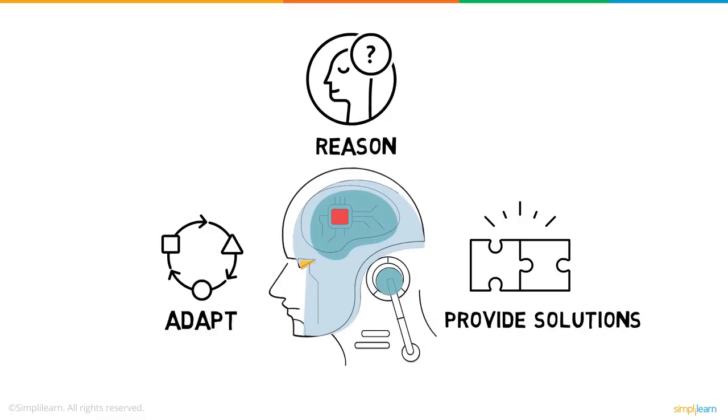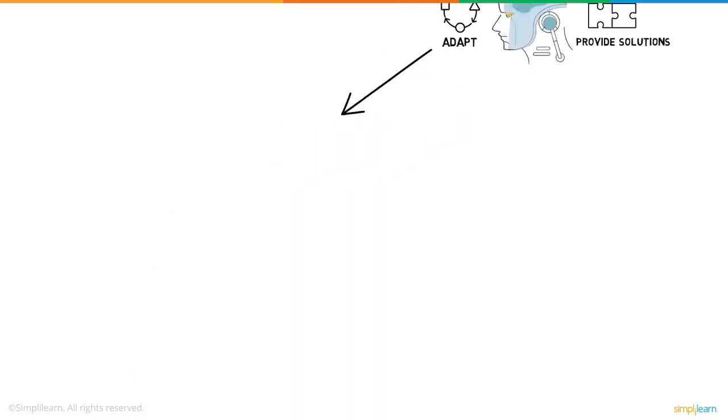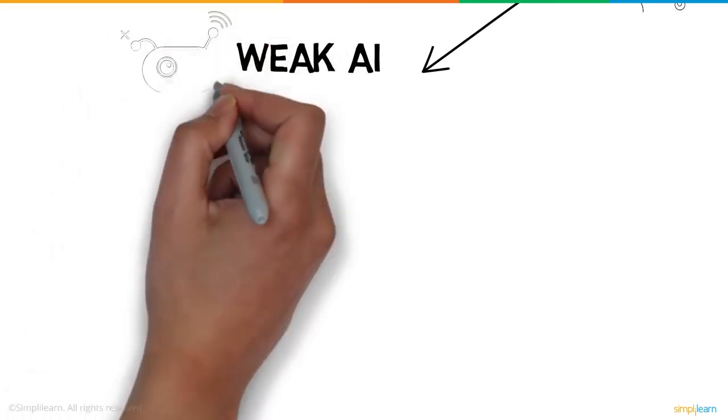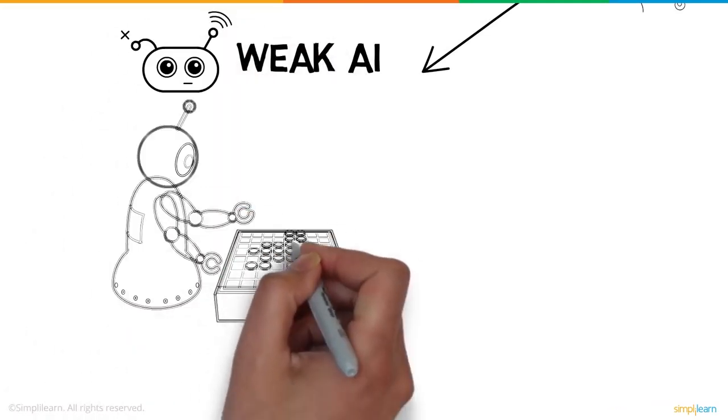Well, now that we know what AI is, let's have a look at the two broad categories an AI is classified into. Weak AI, also called Narrow AI, focuses solely on one task. For example,